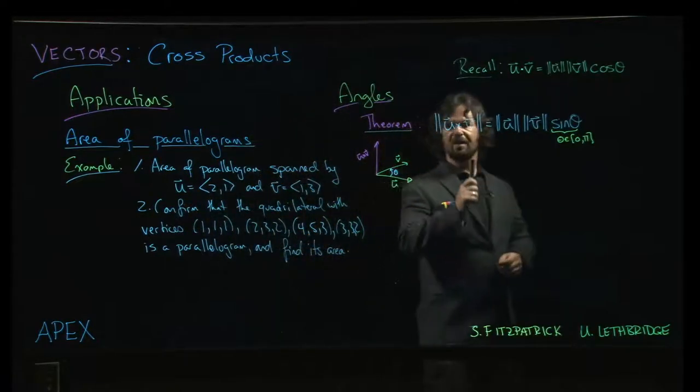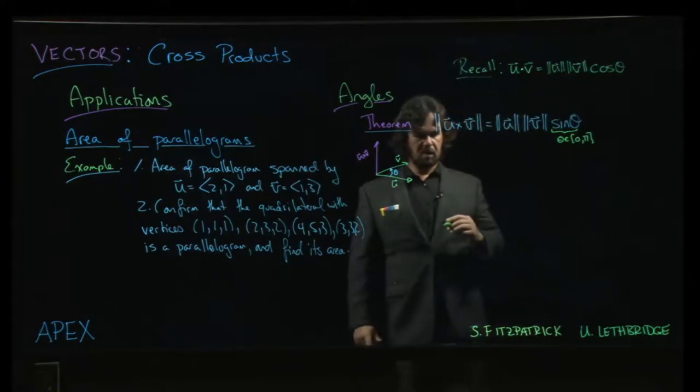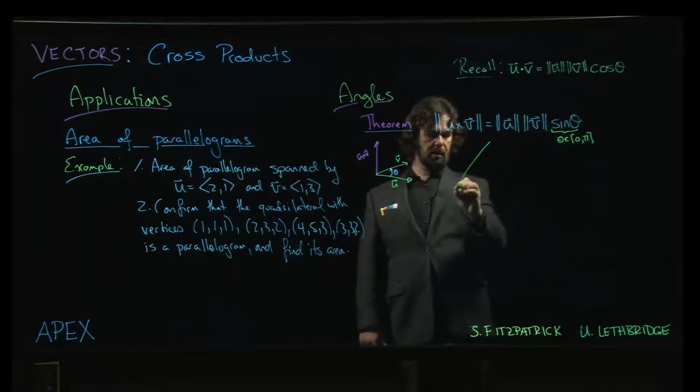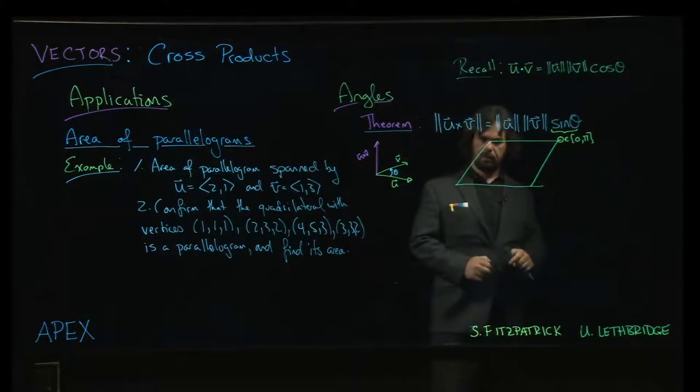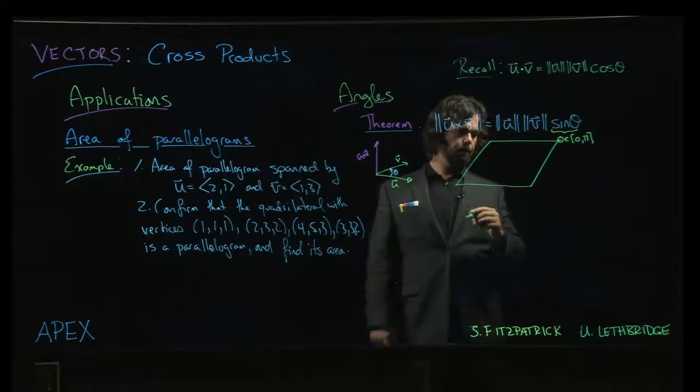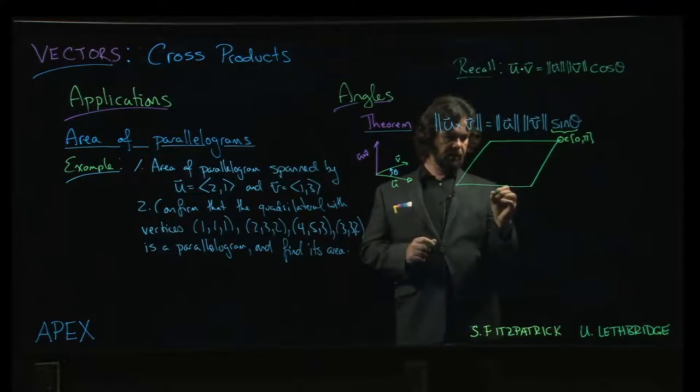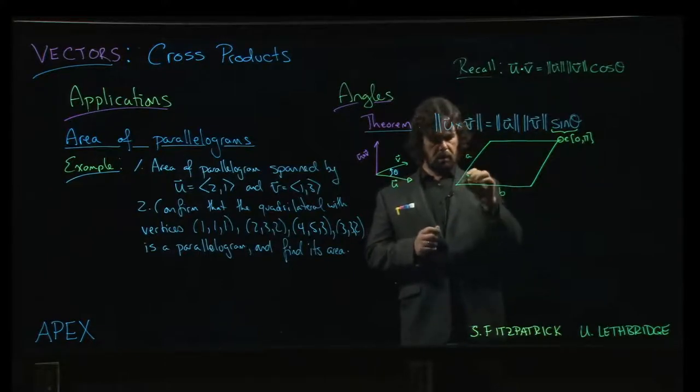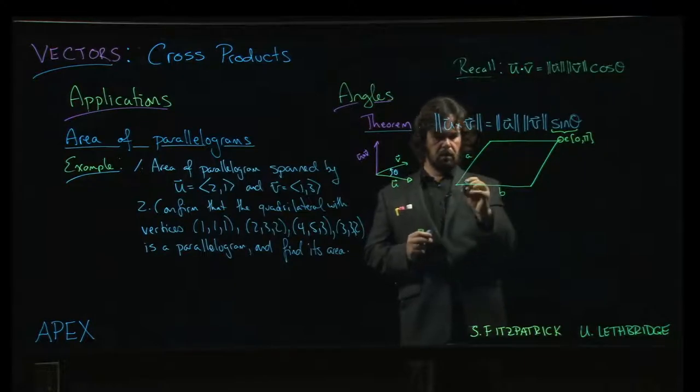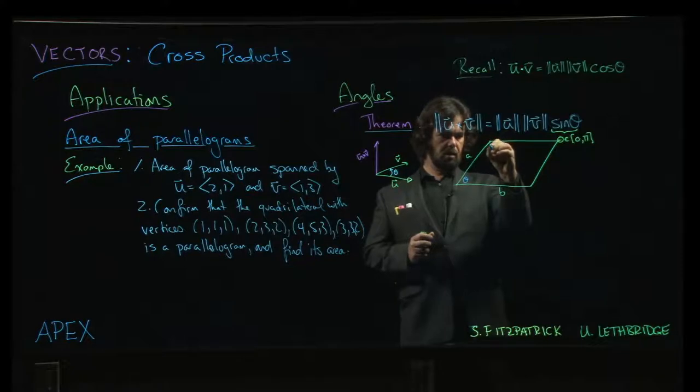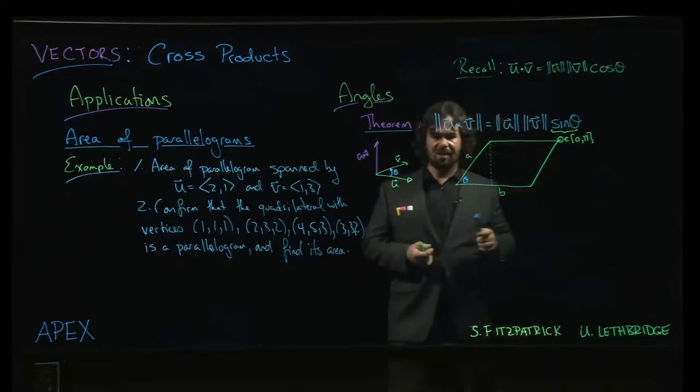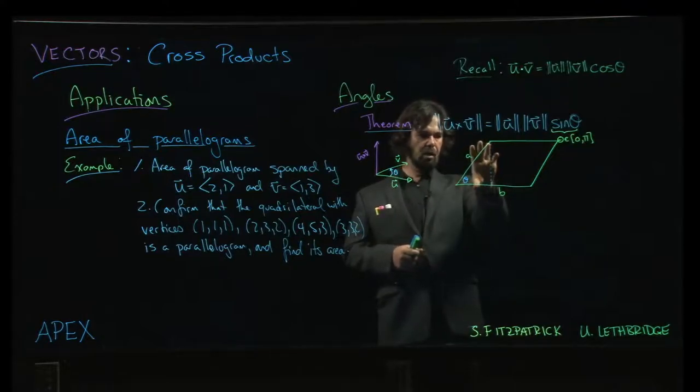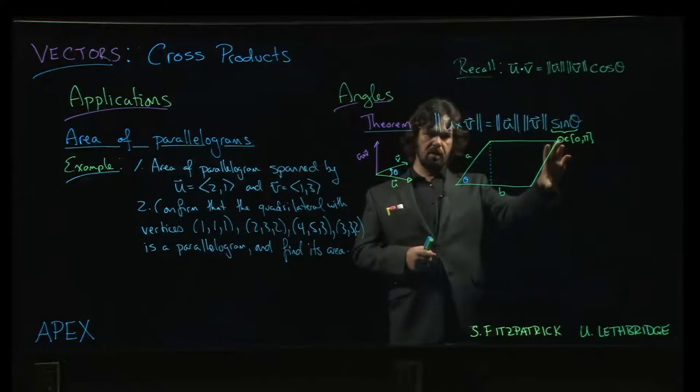So it turns out this formula here may look familiar if you remember a bit of geometry. Think about a parallelogram—remember that a parallelogram has two pairs of parallel sides. Given a parallelogram, let's say these sides have lengths a and b, and we have an angle theta. One of the things you can do is visualize this triangle here. If you chop this triangle off from this side and slide it over to here, you'll have a rectangle.